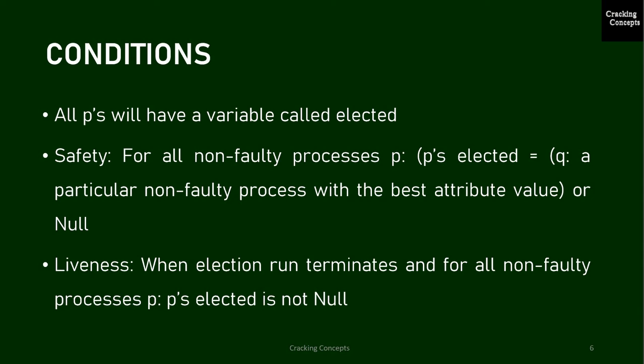Each process has a variable called 'elected' which contains the identifier of the elected process. When a process first becomes a participant in an election, it sets this variable as undefined or null. Each election algorithm must guarantee two things: safety and liveness. Safety means that for all non-faulty processes P, the 'elected' variable will contain the identifier of a particular non-faulty process with the best attribute value — that is, the highest identifier — or it will be undefined if the election is still in its first step.